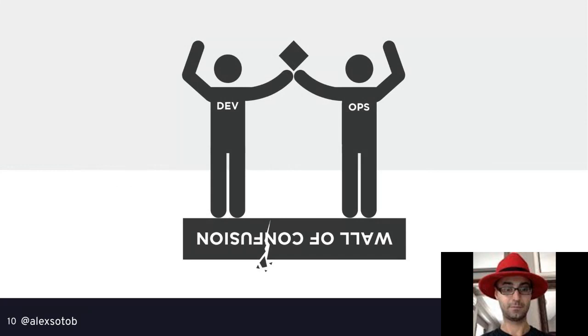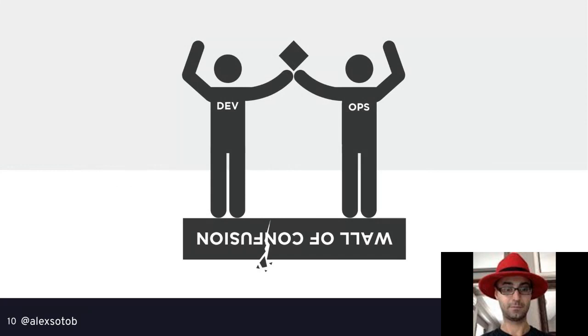We need to break this wall of confusion. We need to work together hand in hand. If the operations team stays all weekend trying to deploy a new service to production, developers should be there as well. This means a change in our definition of 'done.' Usually from the developer point of view, done means closing the issue on the issue tracker — tested, working, merged to master. But that's not true if you want to do DevOps. Something is done when it's deployed and released to production.